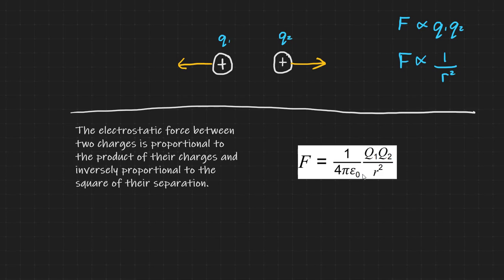The first part of the equation can effectively be treated as one constant. In fact, some exam boards replace it all with a simple K. The ε₀ is the permittivity of free space and represents how easy it is for an electric field to propagate through a vacuum.